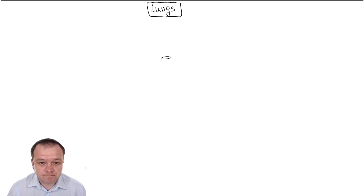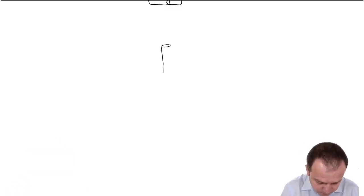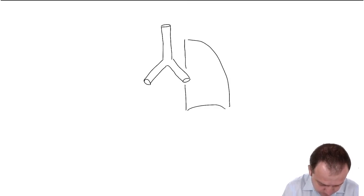Smooth muscles in the lungs, smooth muscles in the bronchial tree. So we have bronchi and we have lungs.